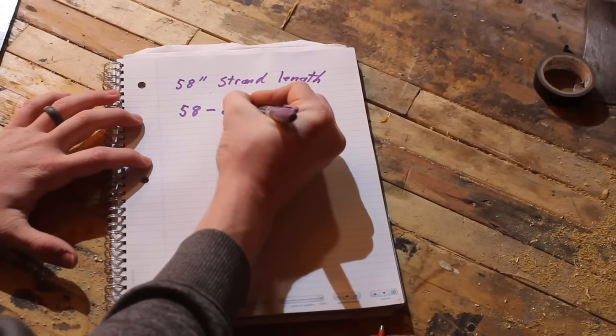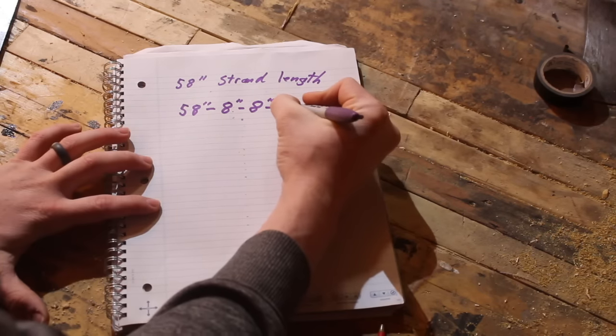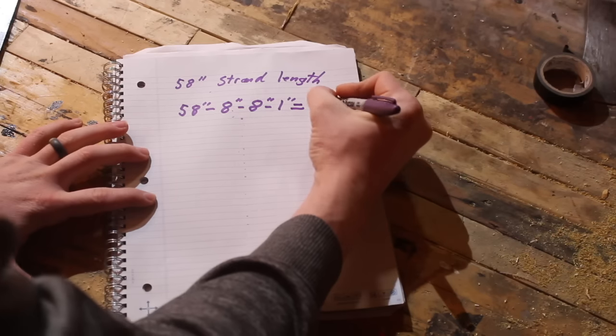How that breaks down is eight inches on both loops. So eight minus eight and then we're going to subtract another one inch for the twist we're going to put into the string.